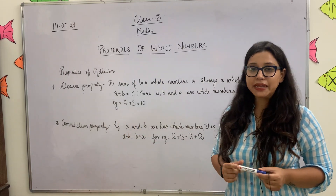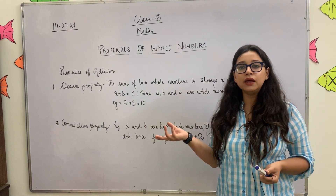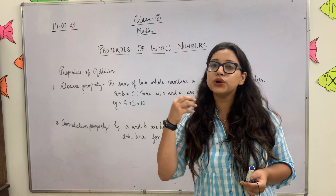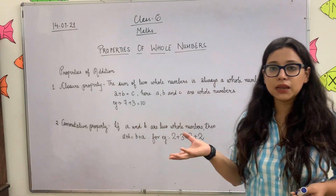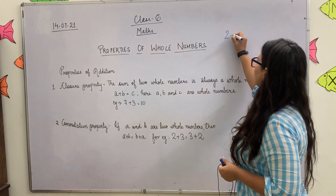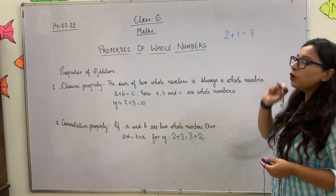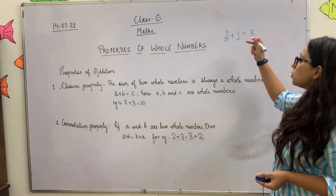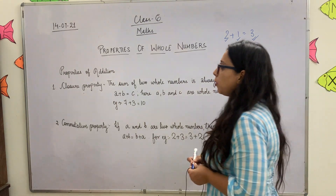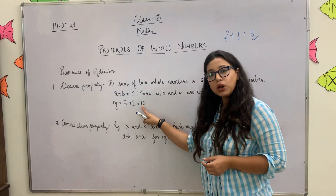Closure Property says that if you add two whole numbers, the answer is also a whole number. For example, 2 plus 1 — 2 is a whole number, 1 is a whole number, and when you add both, the answer 3 is also a whole number, because all these numbers are whole numbers. So closure property states: if you add two whole numbers, the answer is also a whole number.